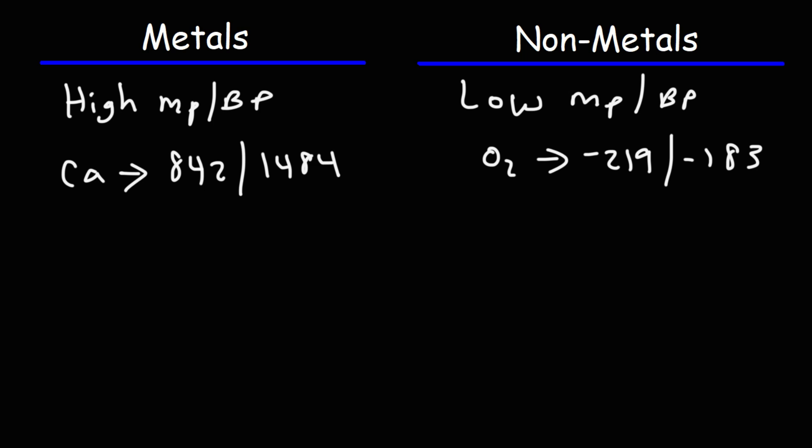But, there are exceptions. For instance, sodium has a relatively low melting point of 98. Its boiling point is pretty high, 883. Sulfur has a higher melting point than sodium, 115. Its boiling point is 445. But, this is low relative to calcium. Tungsten has an extremely high melting point, 3422. Its boiling point is 5930.